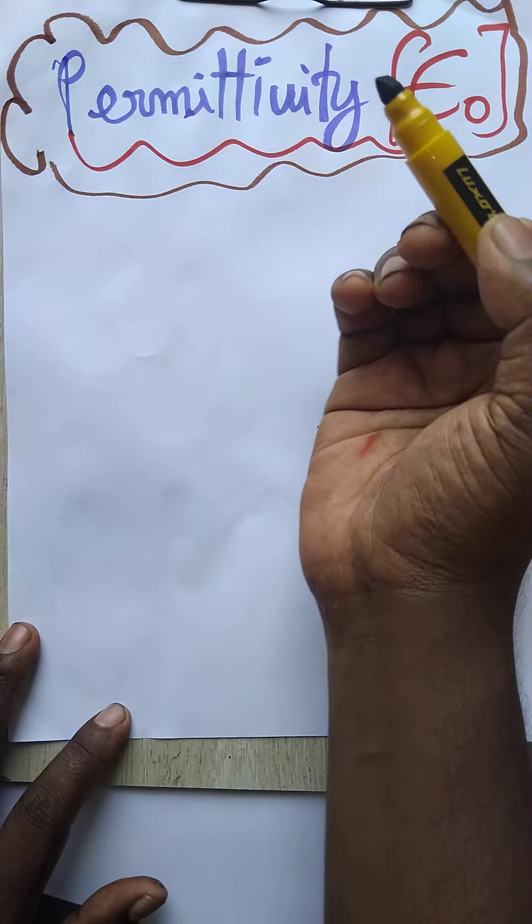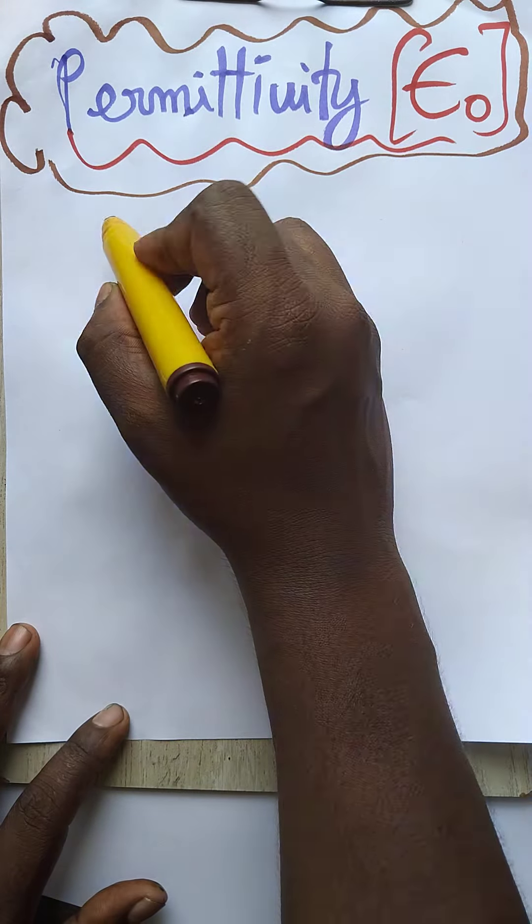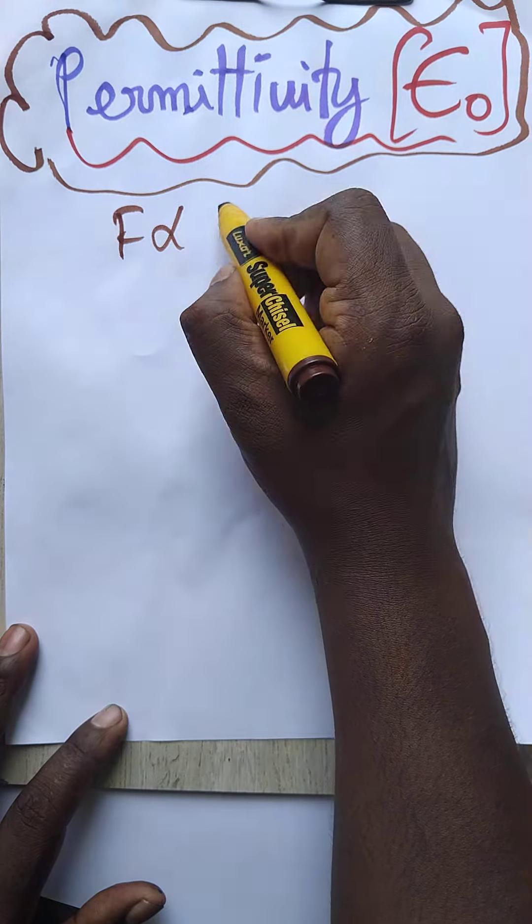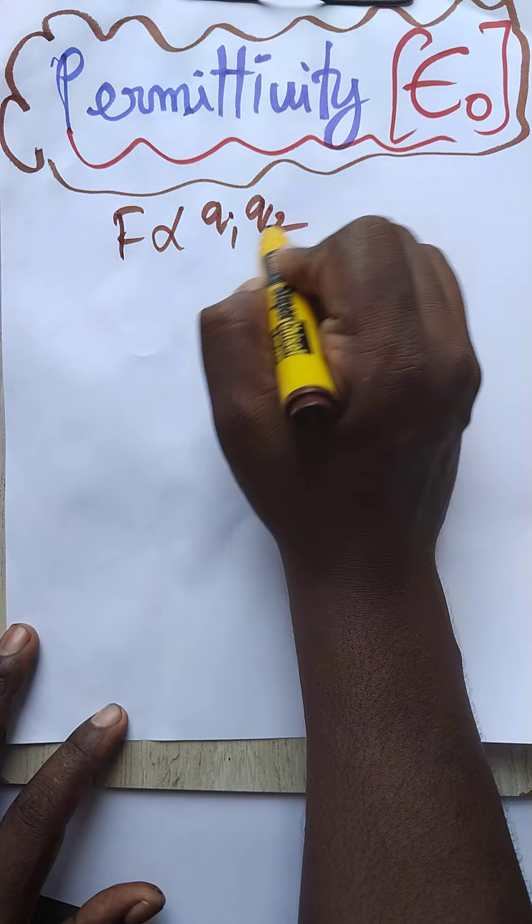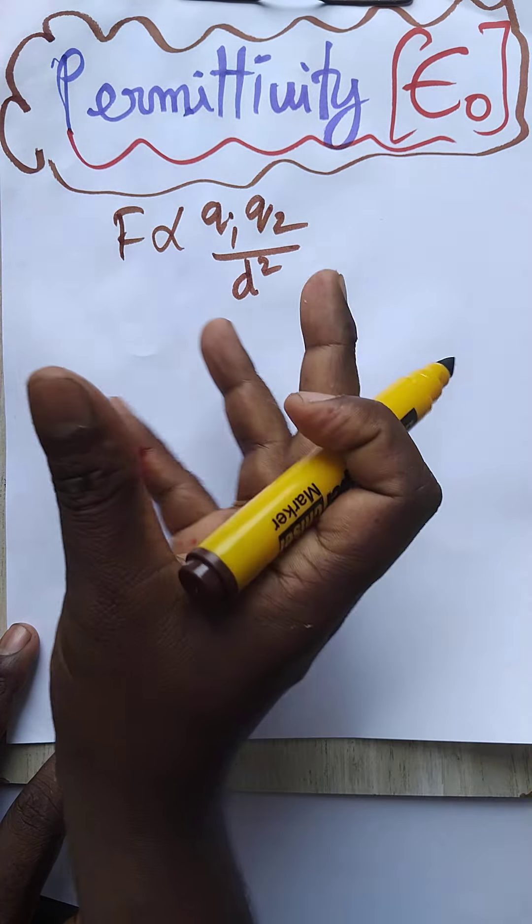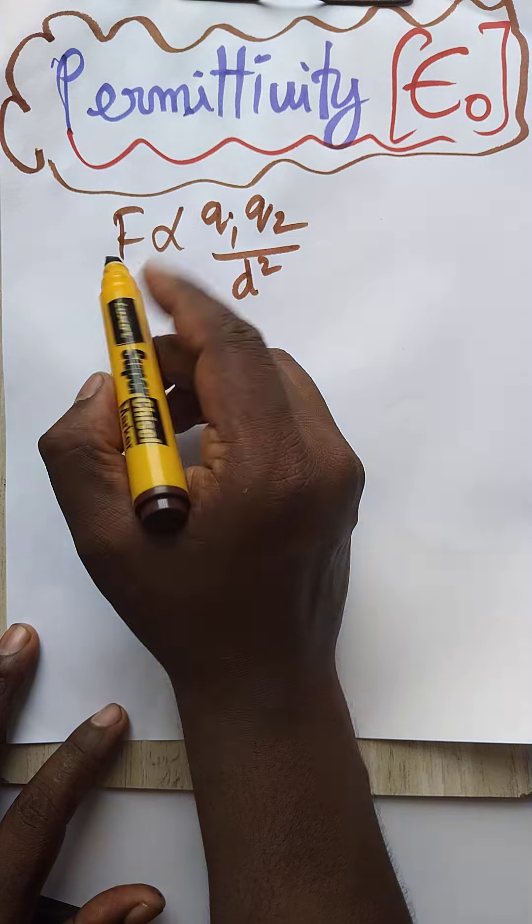Hello students, today we are going to see what is permittivity. Force is directly proportional to the product of charges and inversely proportional to the square of distance, which is called Coulomb's law. When we are removing the directly proportional sign...